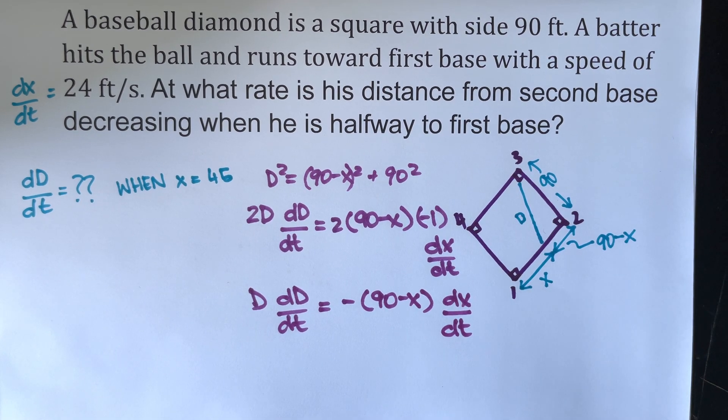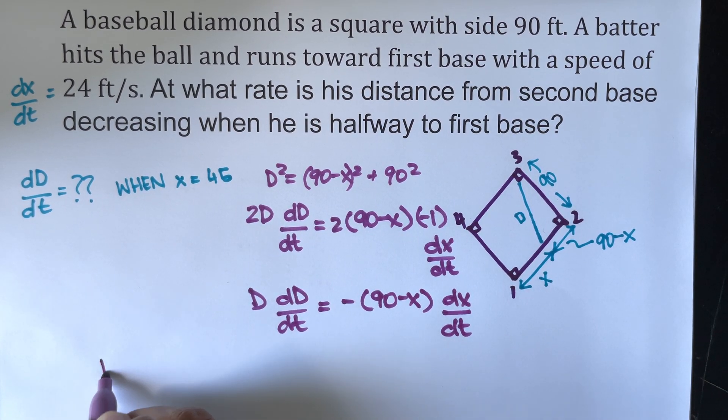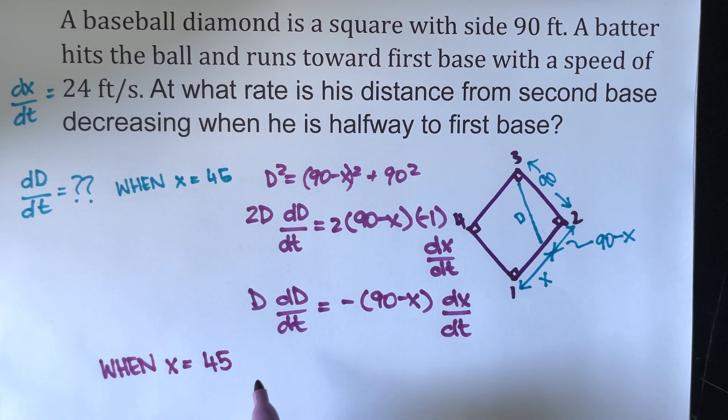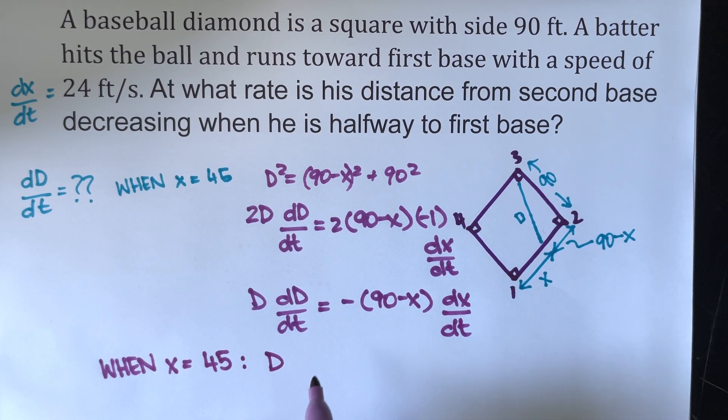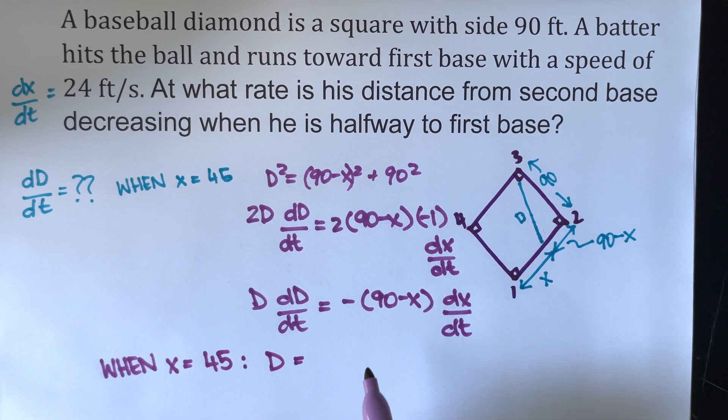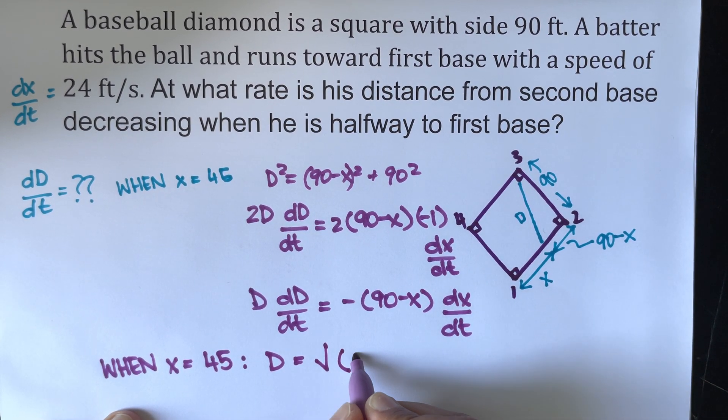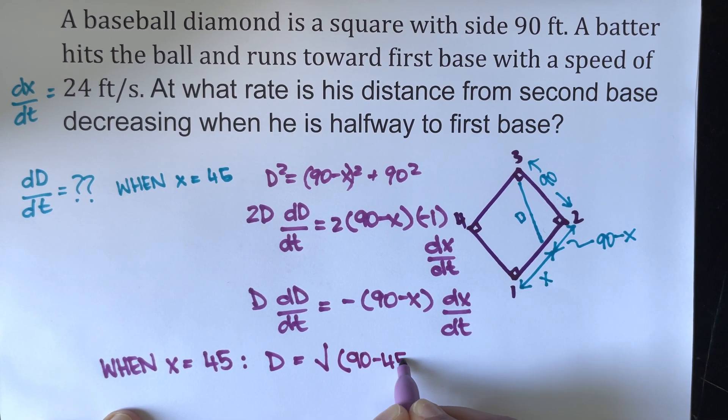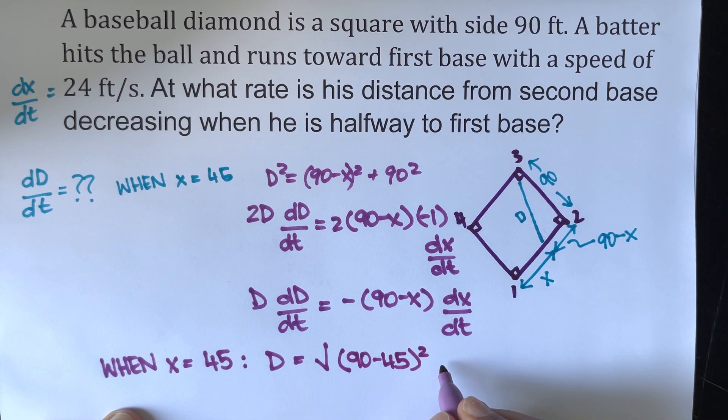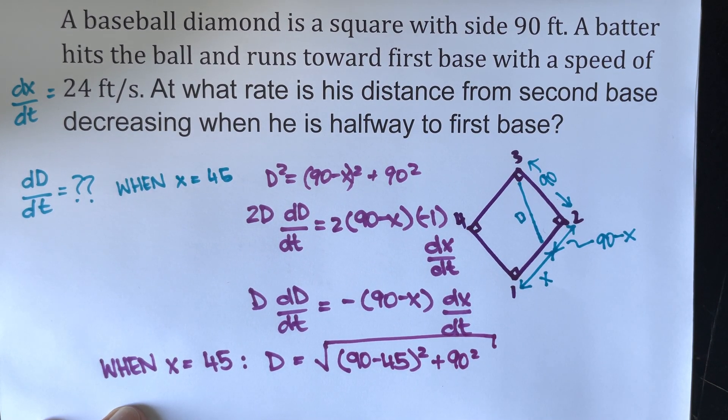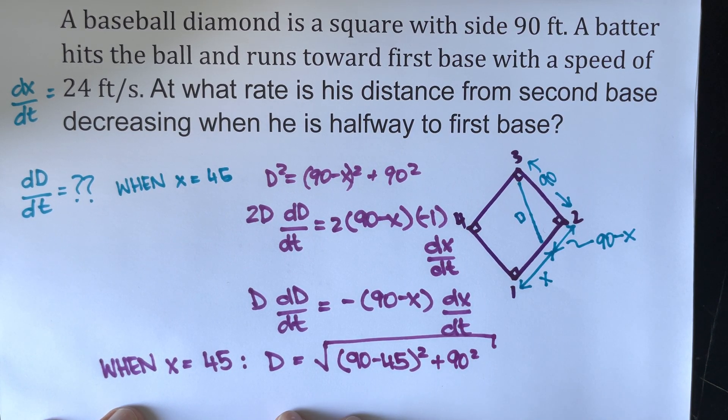Now when x equals 45, we will get d being equal to the square root of (90 minus 45) squared plus 90 squared. That's under the square root. And that will come out to be some value.